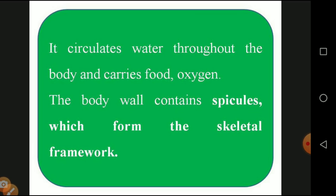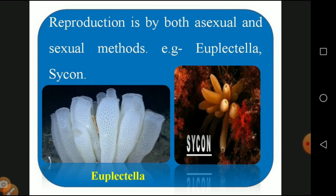The body wall contains spicules which form a skeletal framework. When dry, if you touch any kind of sponge it feels rough and hard — that is the skeletal framework, which provides a defined structure. Reproduction is both asexual and sexual. Examples are Sycon and Leucosolenia. Asexual method means production of spores; sexual method means involvement of both male and female organisms. There is no vegetative reproduction in Porifera.